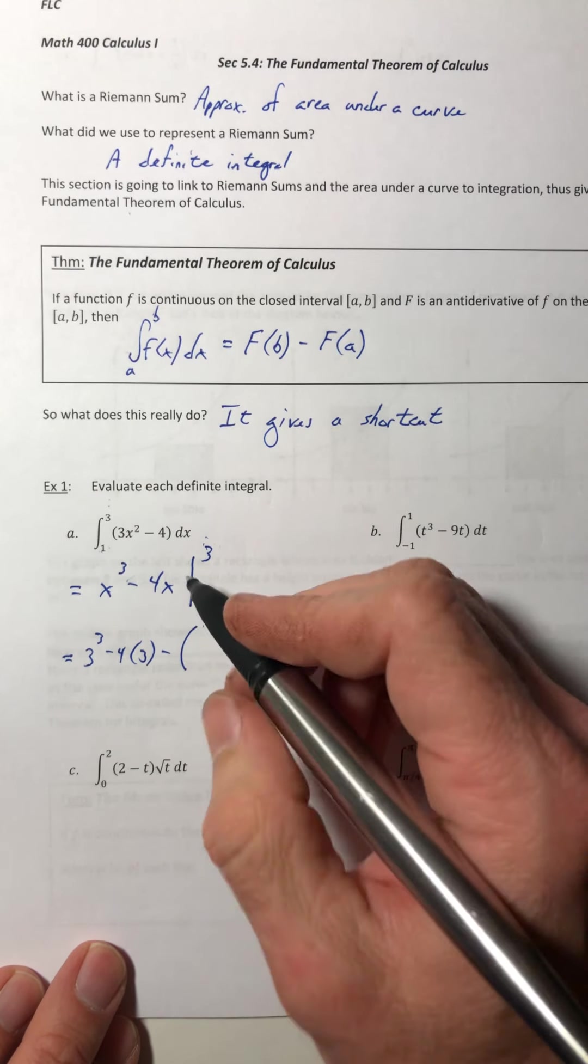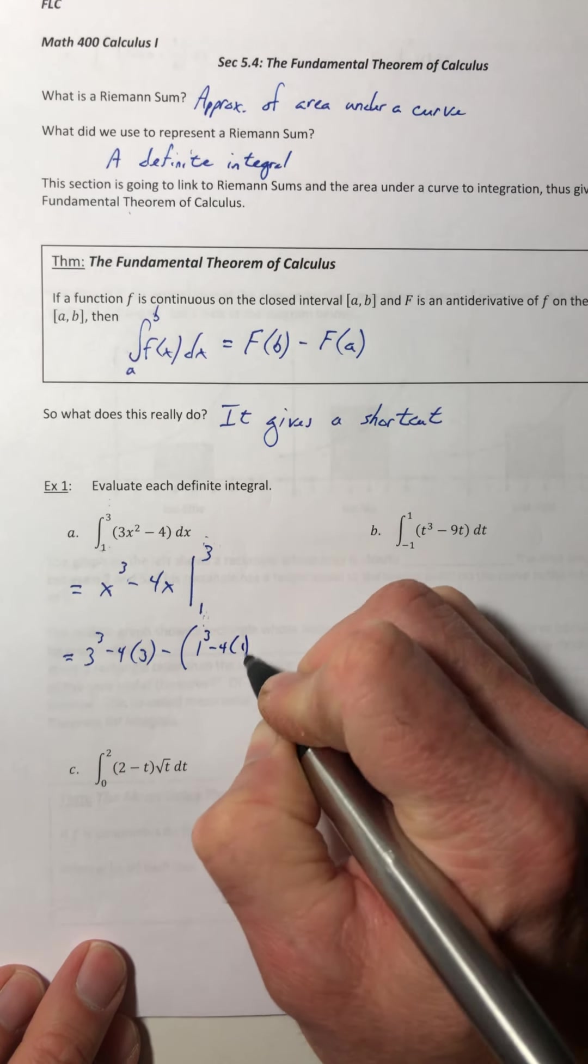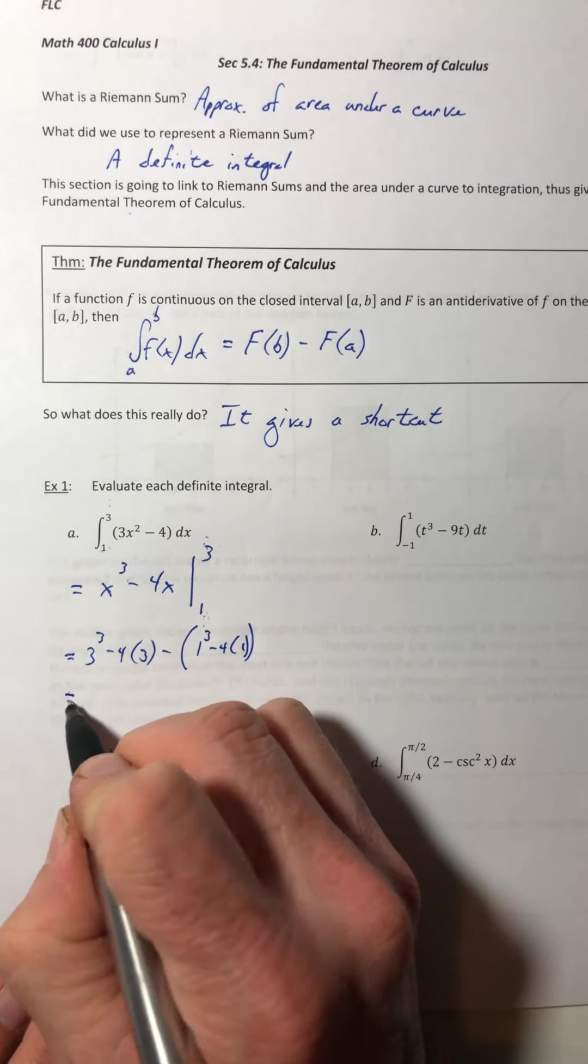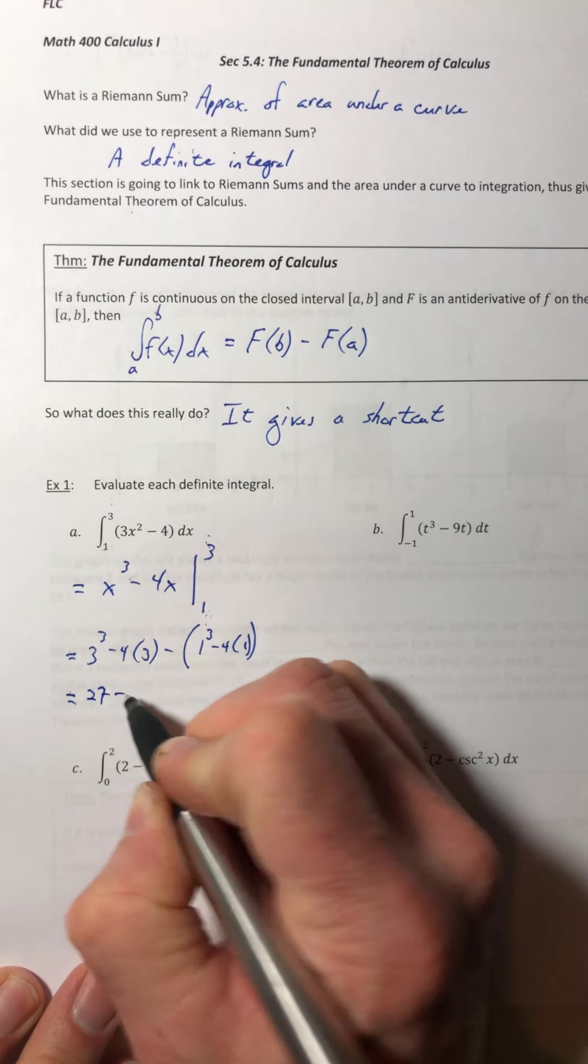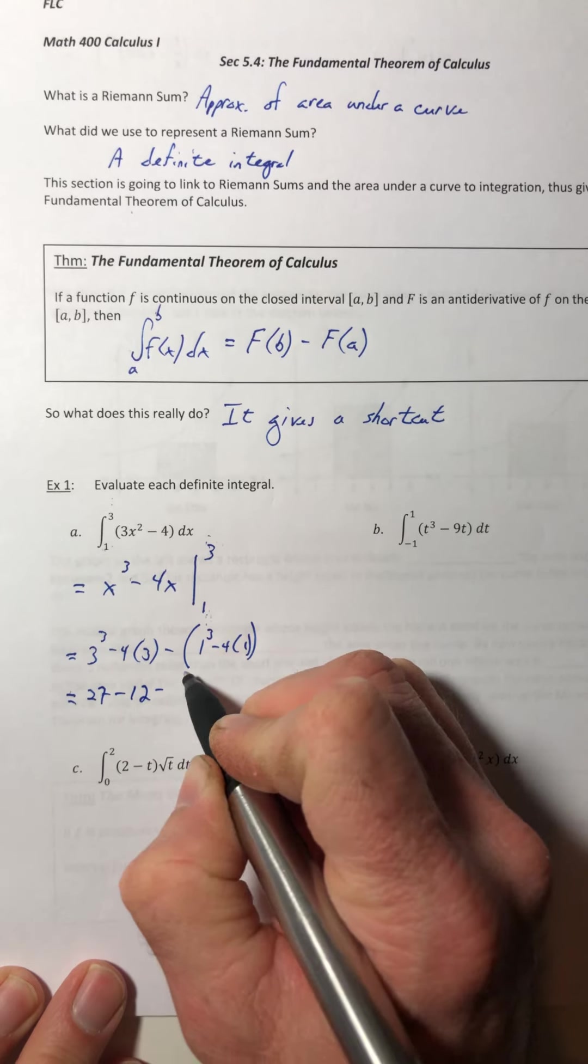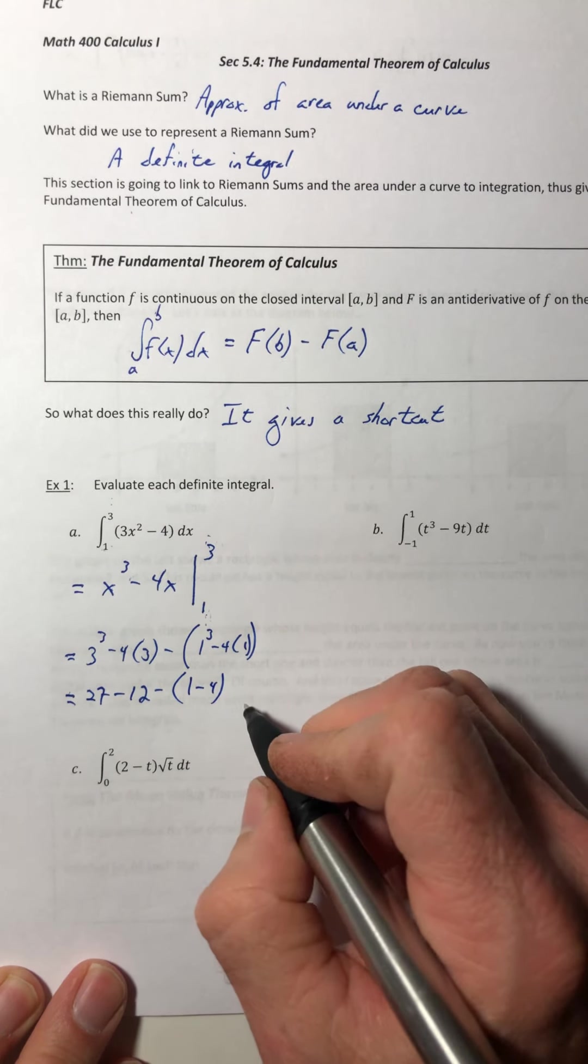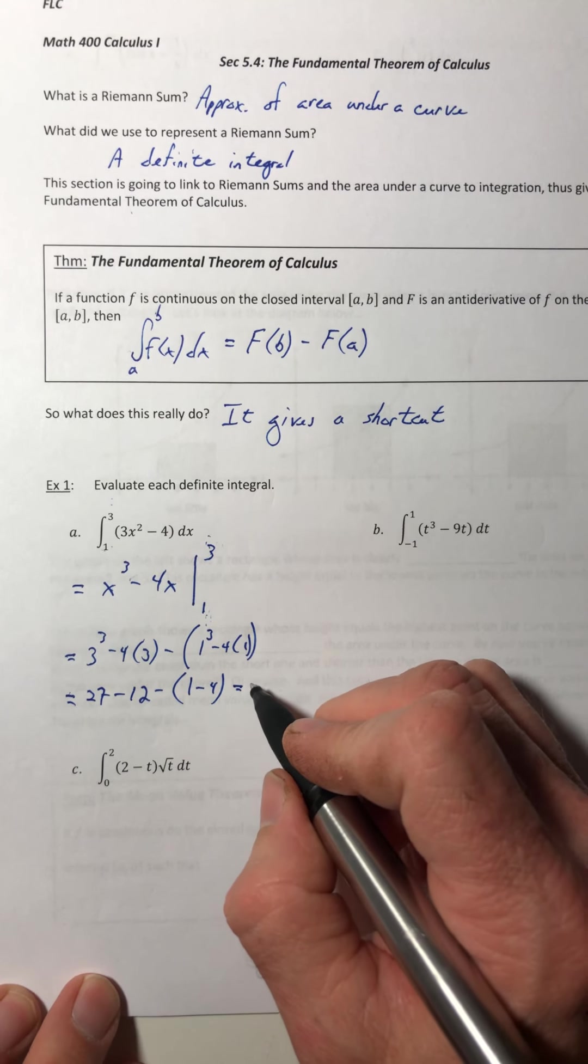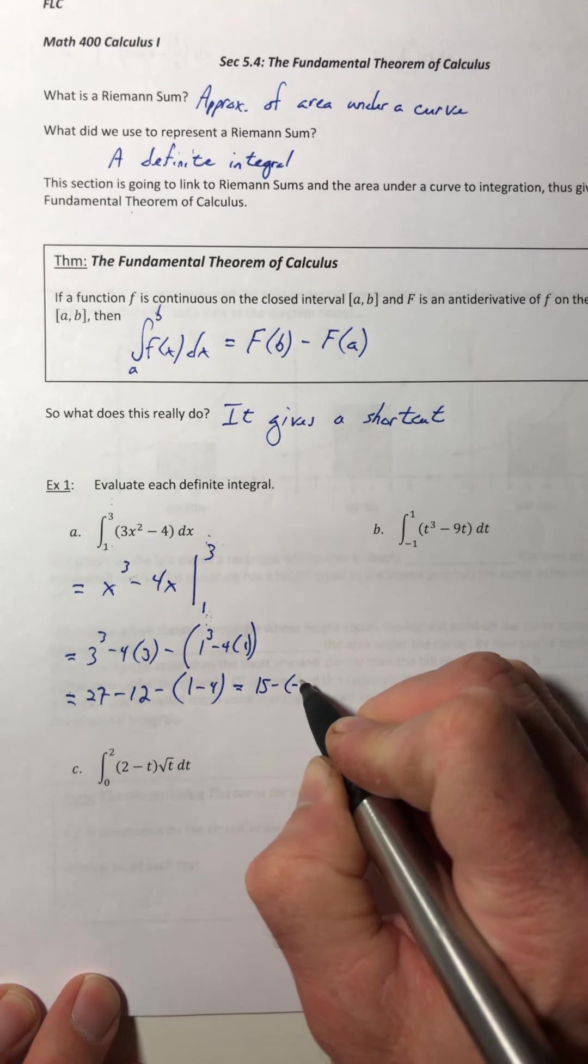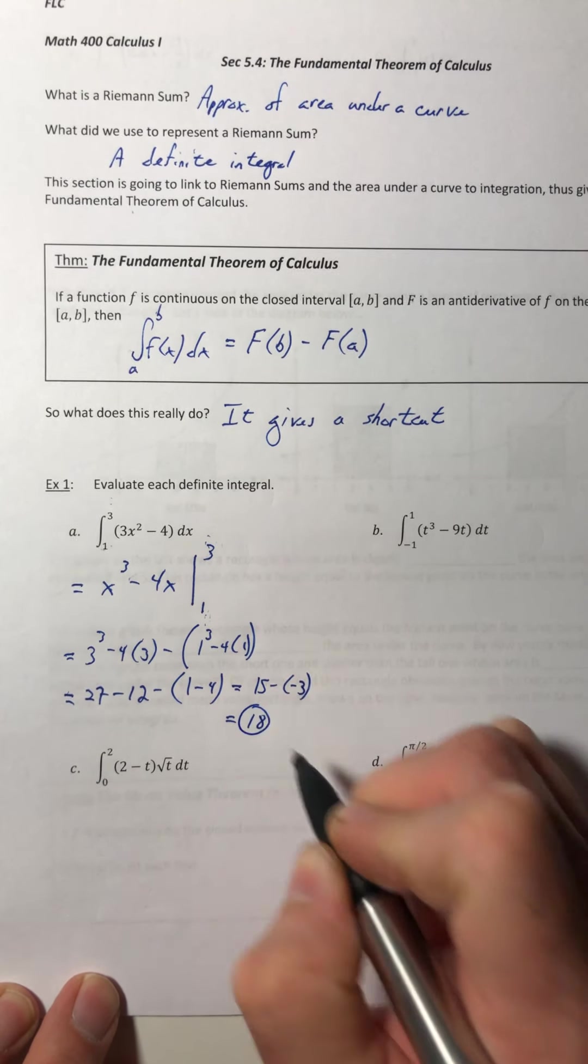So plug in the 3, F(b). Then plug in the 1. And then just work out the arithmetic. So we have 27 minus 12 minus the quantity of 1 minus 4.